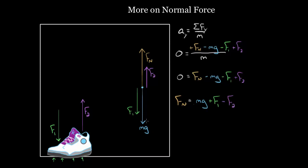This also makes sense. If you pull up on a shoe, you're relieving some of the pressure between the shoe and the floor. So if I pull up with 20 newtons, I'm going to reduce the normal force by 20 newtons, because I'm relieving some of that pressure between the shoe and the floor.